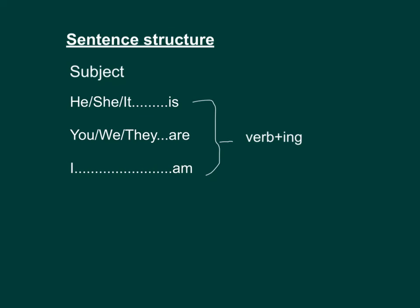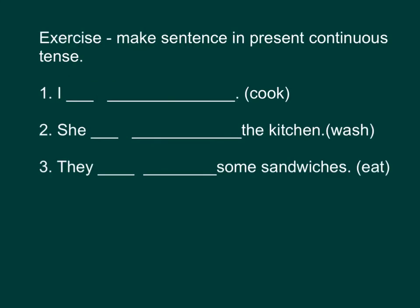小朋友，等我们现在重温一下 present continuous tense 现在进行式的 sentence structure 句子结构。如果 subject 是 he、she、it，我们后面就跟 is，然后将动词 verb 再加 -ing。如果是 you、they、we，后面就跟 are，然后将动词 verb 加 -ing。如果 subject 是 I，我们就跟 am，然后将动词 verb 加 -ing。